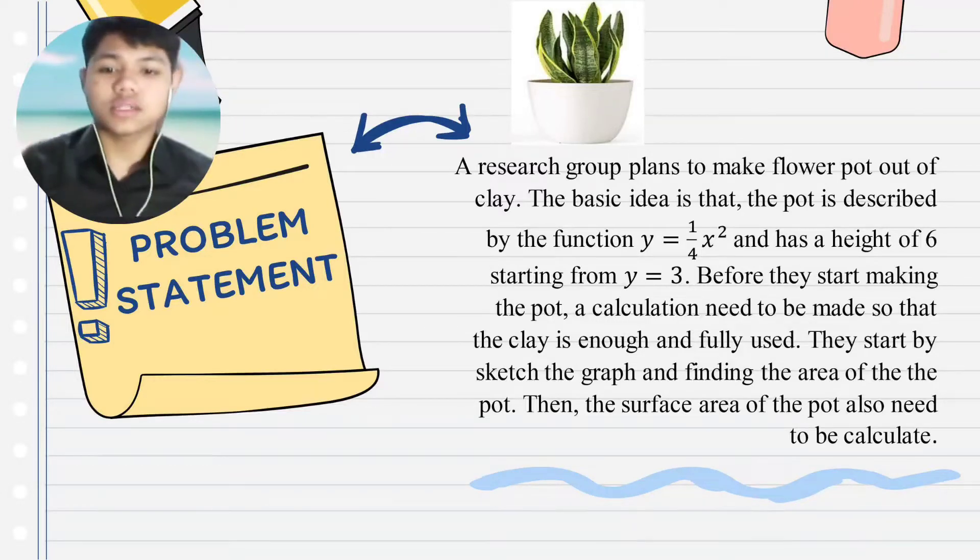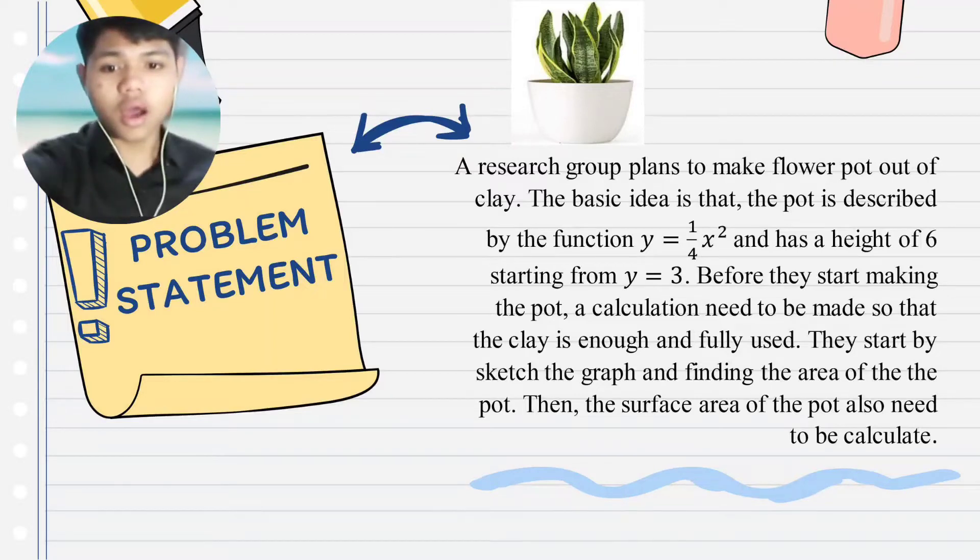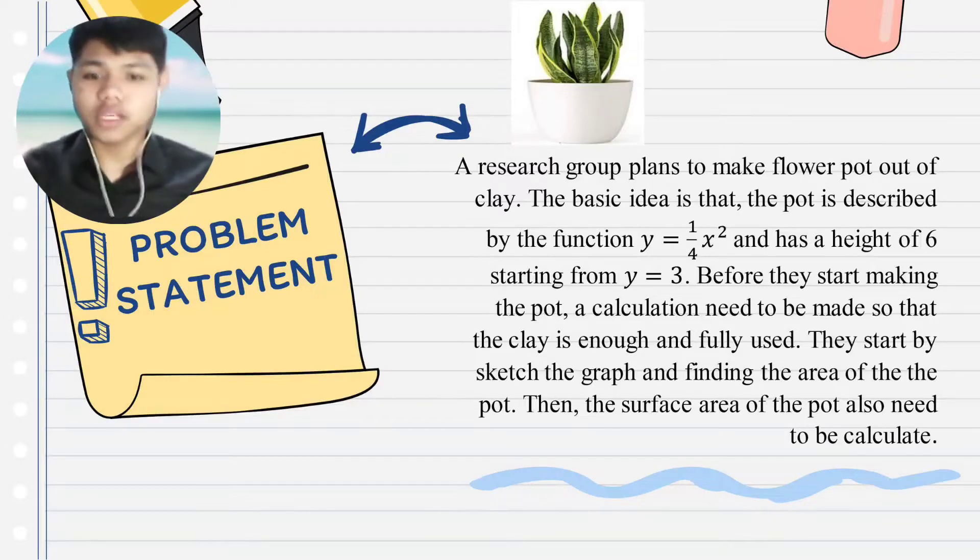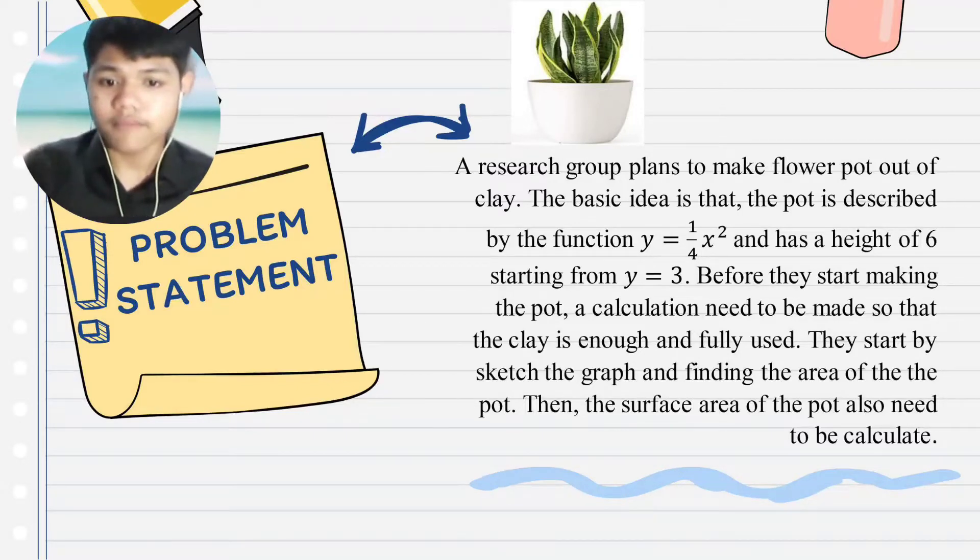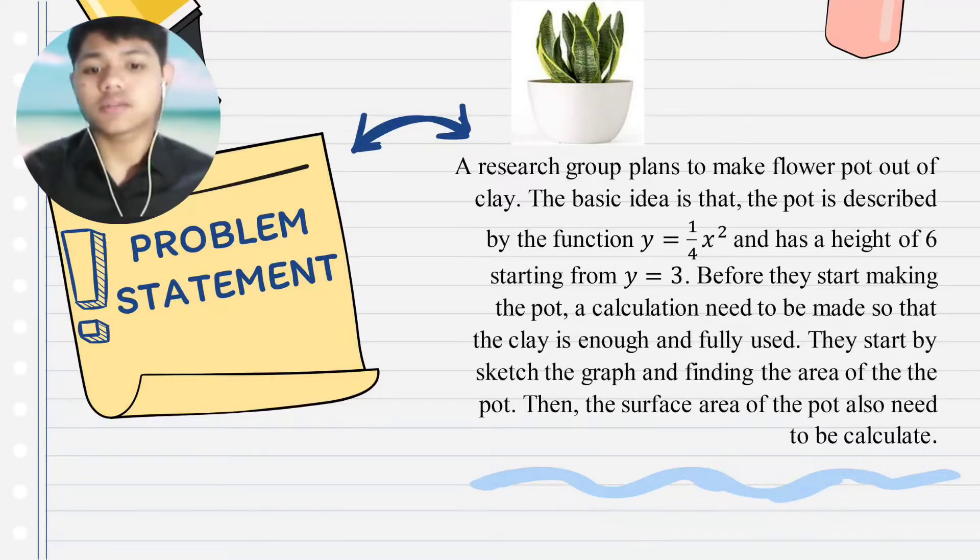Our problem statement is a research group plans to make a flower pot out of clay. The basic idea is that the pot is described by the function y equals 1 over 4 x squared and has a height of 6 starting from y equals 3. Before they start making the pot, a calculation needs to be made so that the clay is enough and fully used. They start by sketching the graph and finding the area of the pot. Then, the surface area of the pot also needs to be calculated.